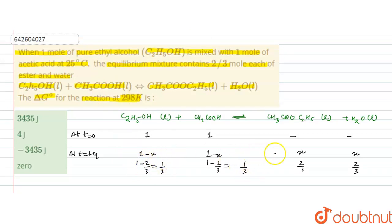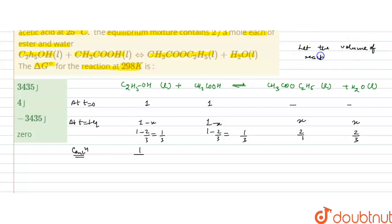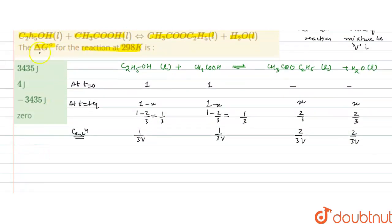Now we have the number of moles. To find concentrations, we divide by volume. Let the volume of the reaction mixture be V liters. The concentration of ethyl alcohol is 1/(3V), the concentration of acetic acid is also 1/(3V), the concentration of ester is 2/(3V), and the concentration of water is 2/(3V).